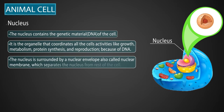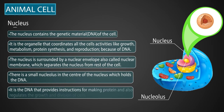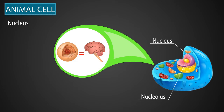The nucleus is surrounded by a nuclear envelope, also called the nuclear membrane, which separates the nucleus from the rest of the cell. There is a small nucleolus in the center of the nucleus, which holds the DNA. The DNA provides instructions for making protein and regulates the growth and division of cells. You can compare the nucleus to the brain in the human body — the way the brain coordinates all actions is similar to how the nucleus guides all activities in the cell.